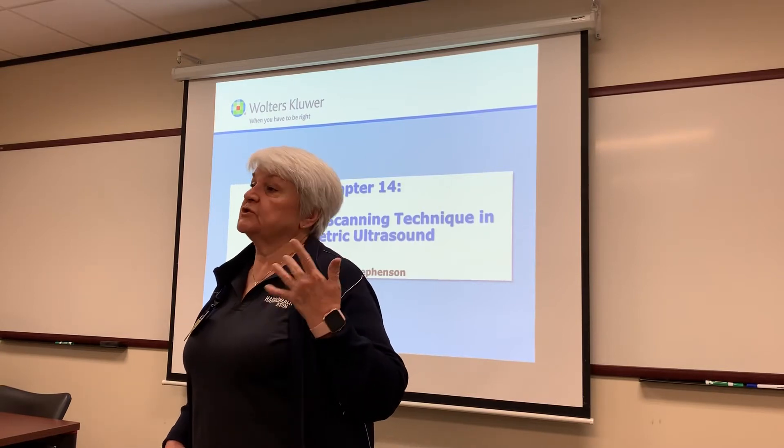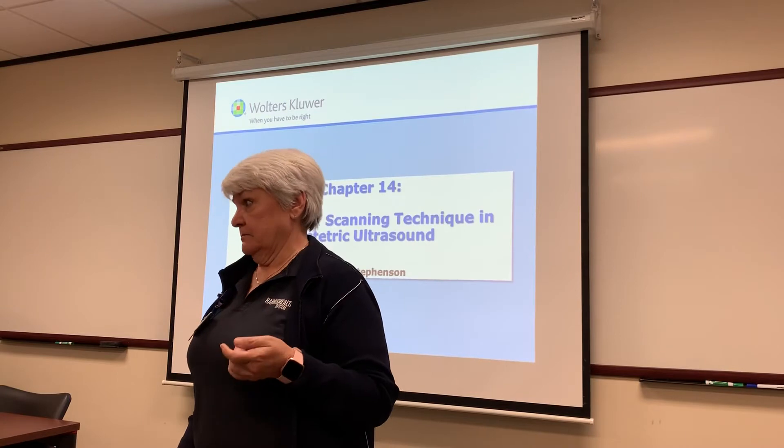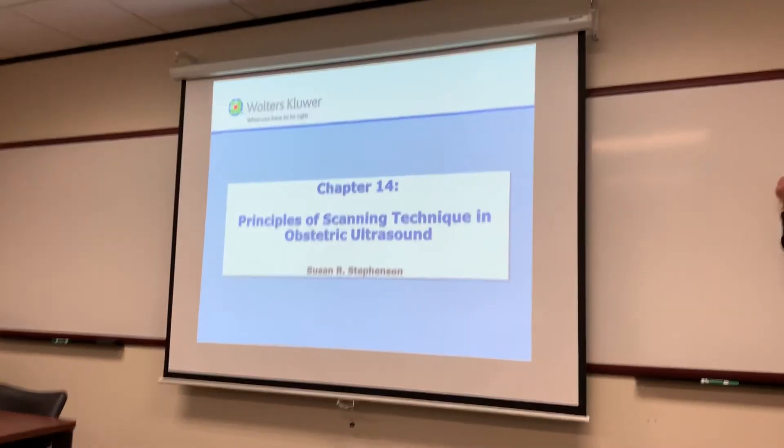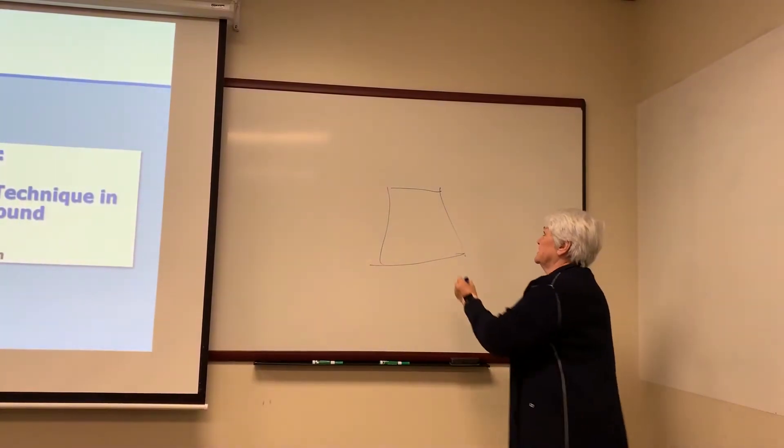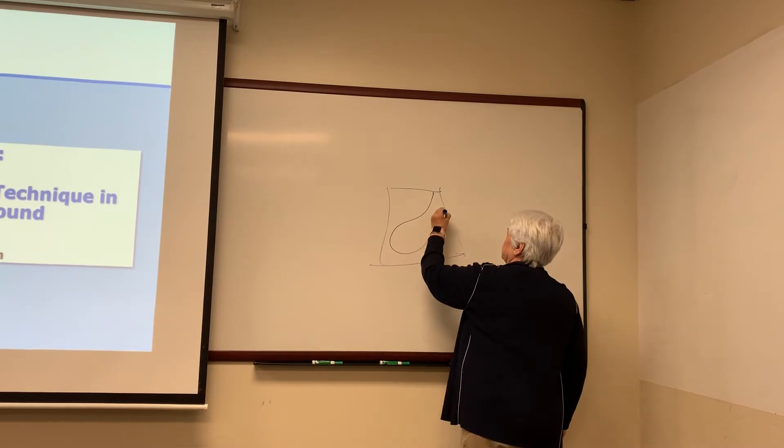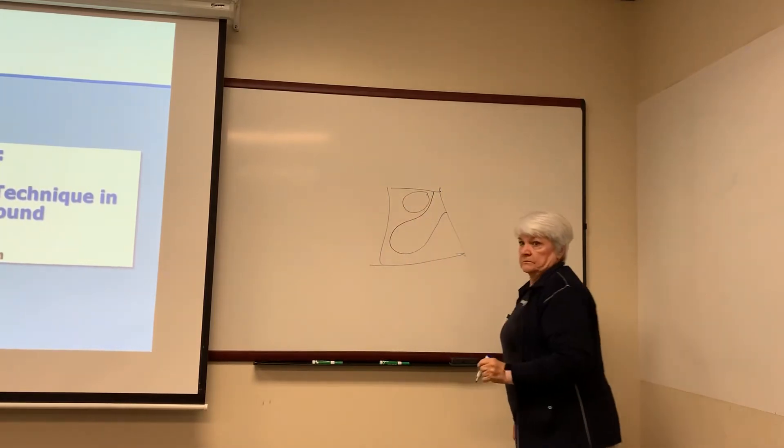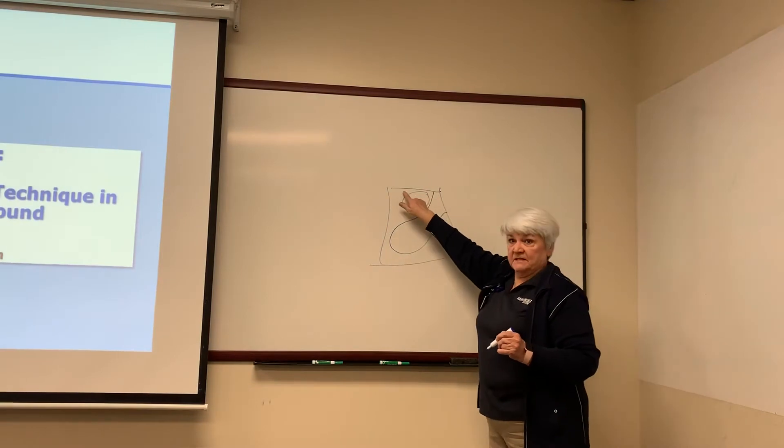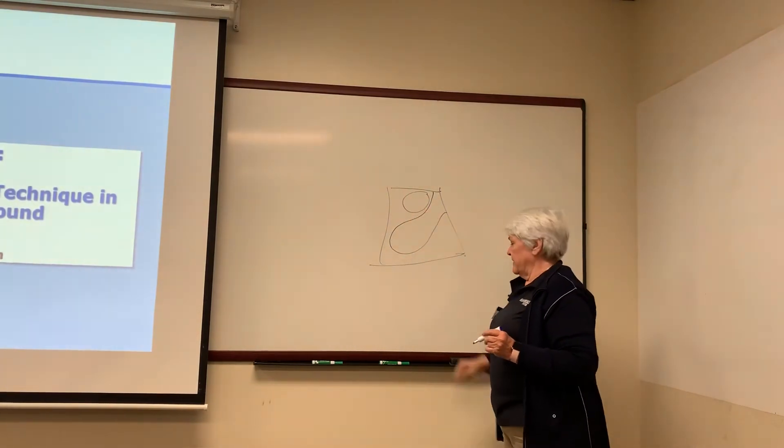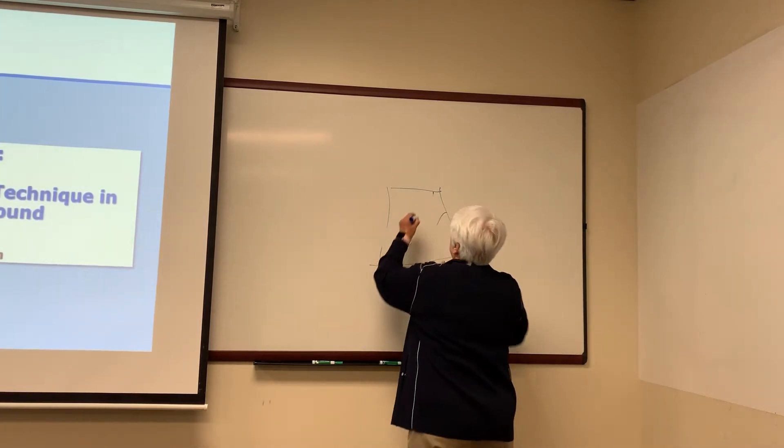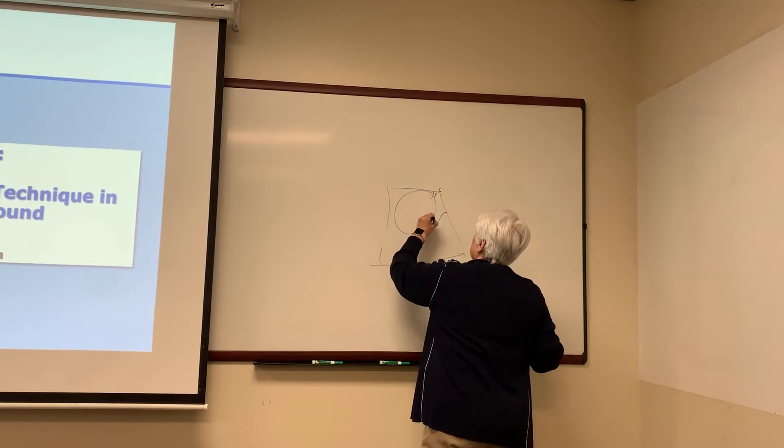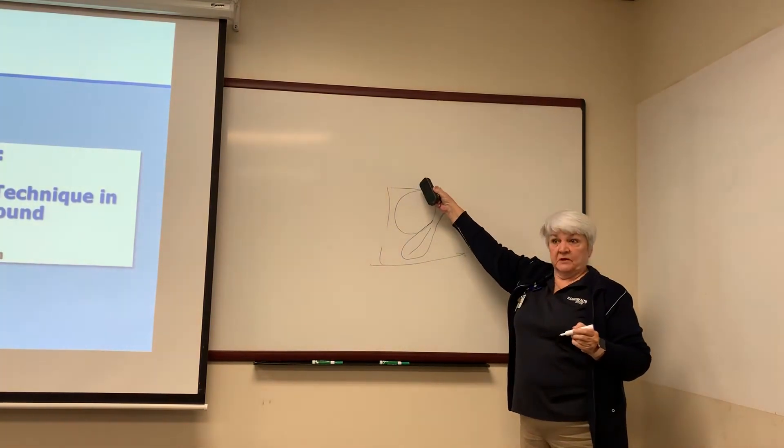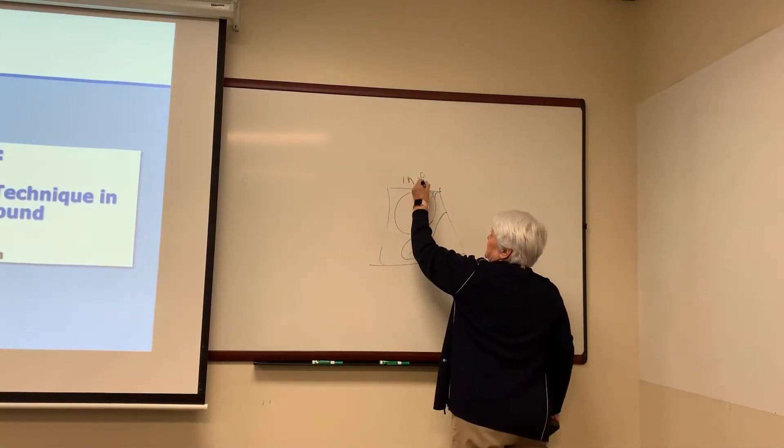But if I do a transvaginal, I need an empty bladder. Because if I'm doing a transvaginal, here's my screen. Here's my screen, and my uterus is going to do this, right? Here would be my bladder, because this is my anterior cul-de-sac, my posterior cul-de-sac, my space of ritzes. So the fuller my bladder is, the more my uterus is pushed down. So when I put in my probe, because I put in my probe here, because this is inferior, right? Inferior, superior.